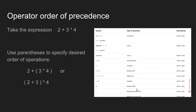Instead of trying to memorize the large precedence table, we can use parentheses to explicitly specify the order we want our expression to execute. If we want 3 to multiply by 4, it's good practice to put parentheses around the 3 times 4. The innermost parentheses execute first, then you work your way out. If I want 2 plus 3 to occur before the multiplication, I put parentheses around 2 plus 3, then multiply that quantity by 4. So 2 plus 3 gives 5, then 5 times 4 gives 20.